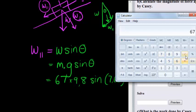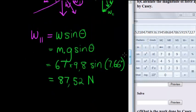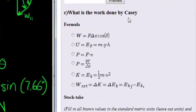That's 67 times 9.8 times sine of 7.66. What do we get? 87.52 Newtons. That's how much force he's applying to push his friend up this incline. In other words, that is the value for T, 87.52.